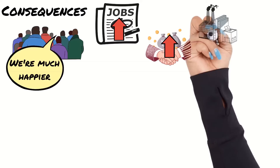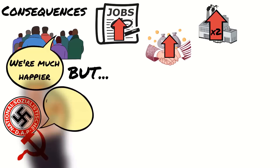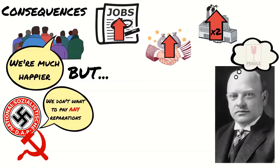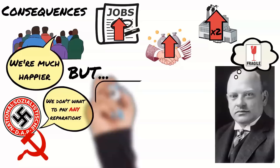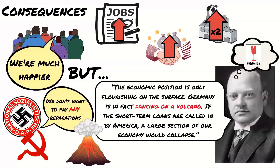The investment in industry meant that industrial output doubled by 1928 and passed pre-World War 1 levels. However, not everything was as rosy as it seemed. Extremist parties still existed and opposed any reparations payments, and they had support in this. Any further economic problems were likely to cause an increase in support for these parties. Additionally, even Stresemann knew that recovery was fragile — it relied on foreign loans, and should these be stopped or recalled, the whole thing would collapse. In 1929, Stresemann gave a speech in which he said: 'The economic position is only flourishing on the surface. Germany is, in fact, dancing on a volcano. If the short-term loans are called in by America, a large section of our economy would collapse.'